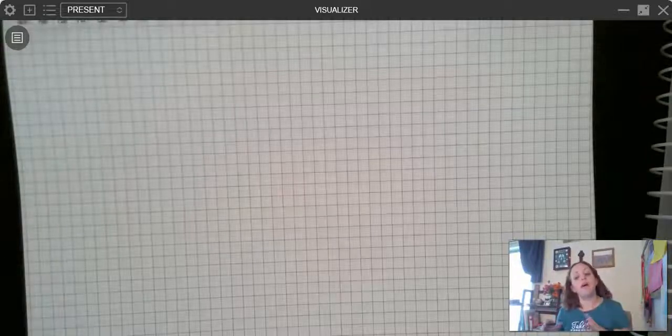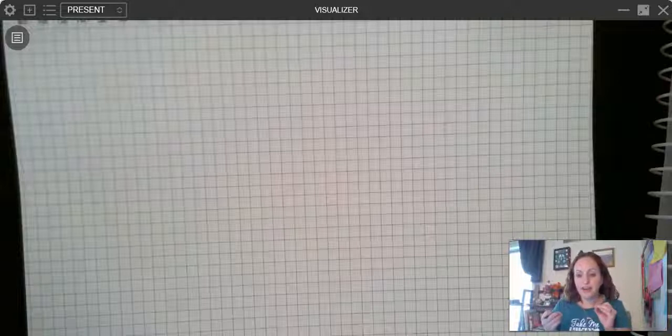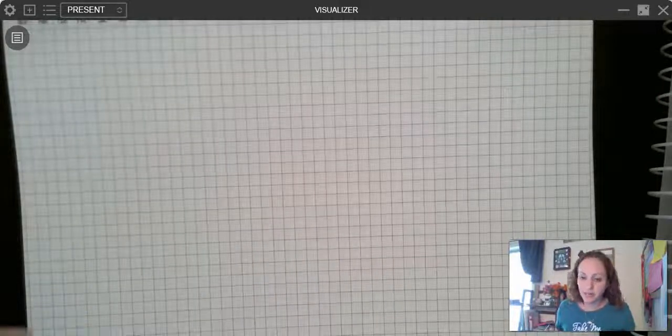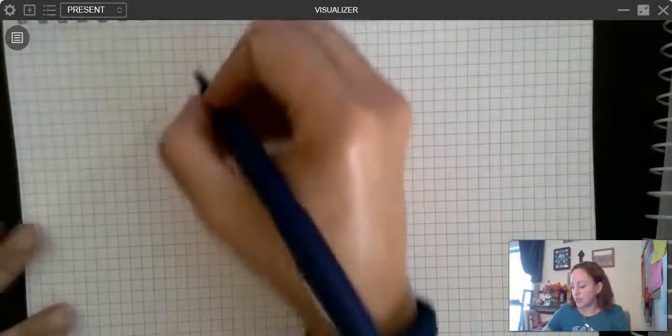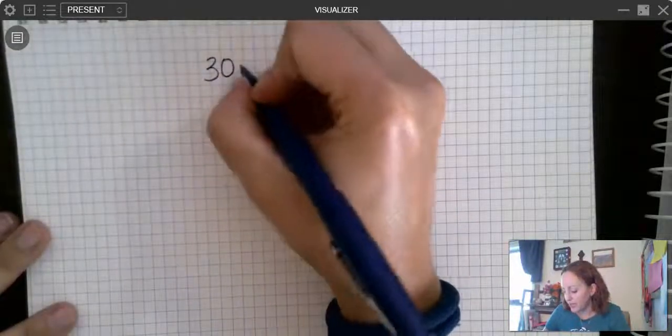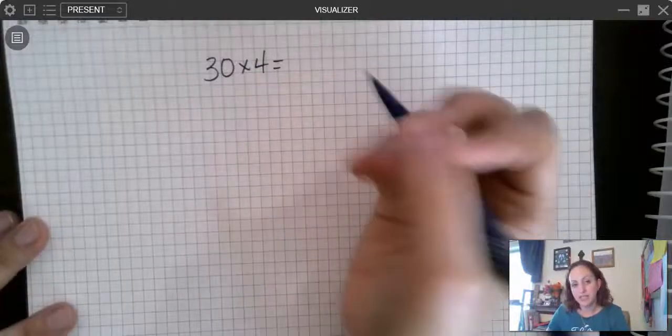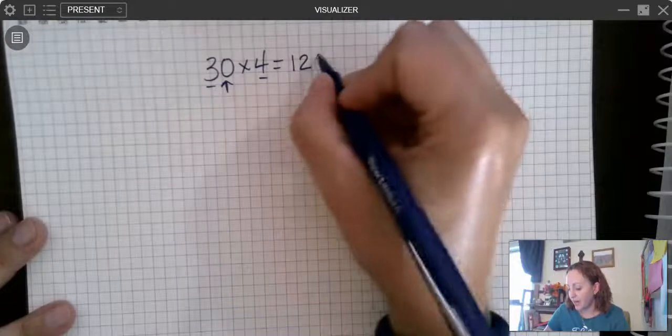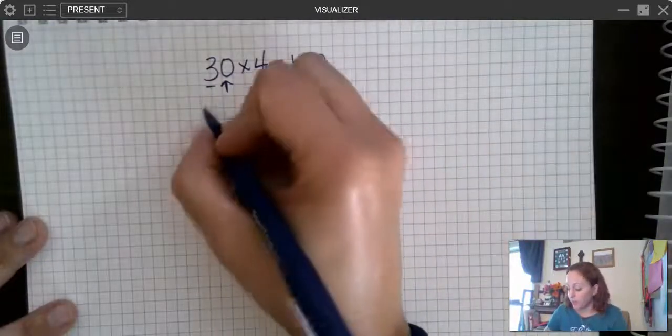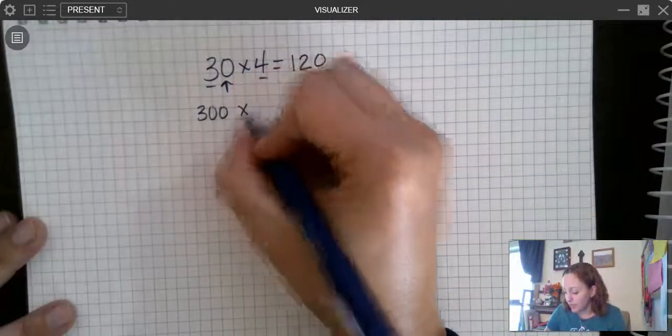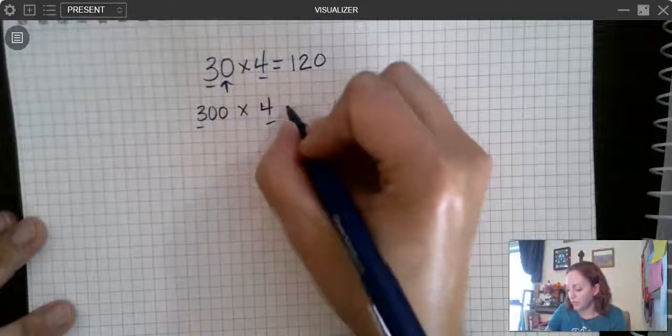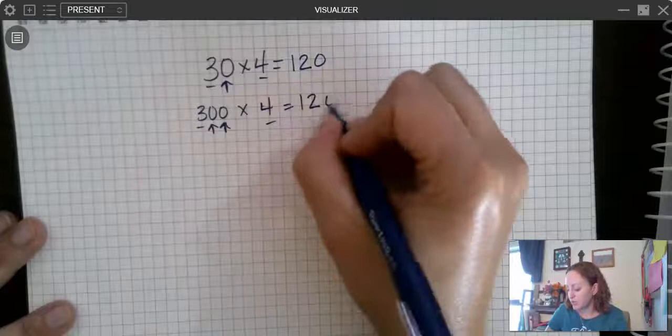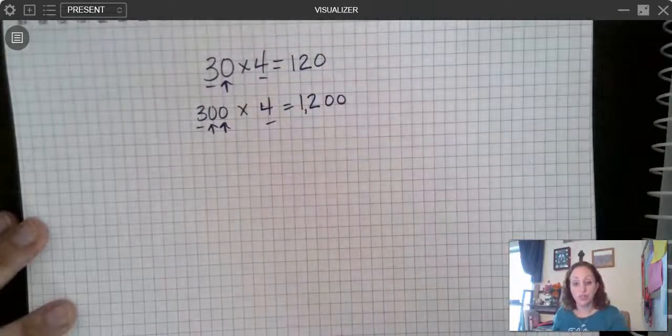All right, so let's start by looking at how to multiply with multiples of 10. Remember that's numbers that end in zeros. So in the last unit we looked at something like 30 times 4 and we said okay, well we can take the 3 times 4 and we know that equals 12 and then we can add on the zero. Or if we have 300 times 4 we again look at 3 times 4 that equals 12 and this time we have two zeros so we add on the two zeros.